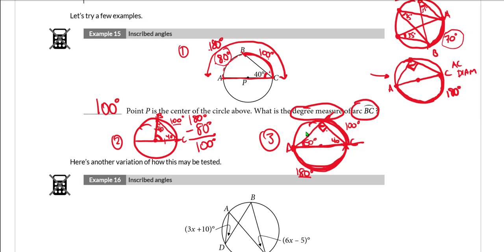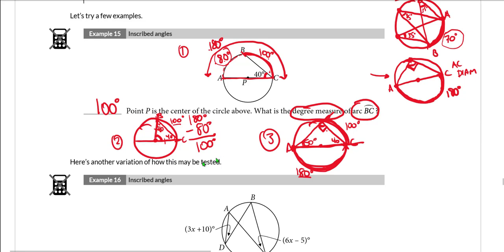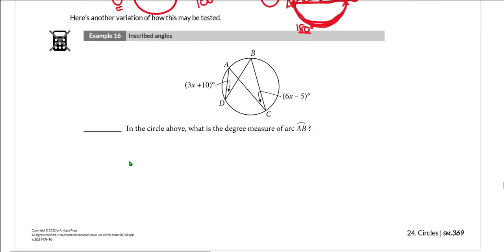There are usually multiple ways to do these questions. If one method doesn't come to you, you may be able to use an alternate method. Some methods require knowing the inscribed angle rules, while others — like method two — don't.